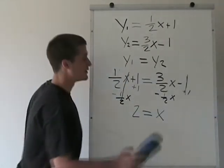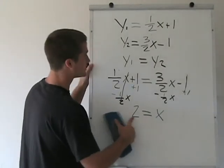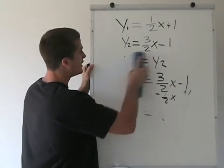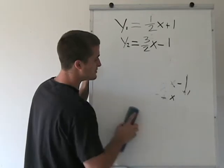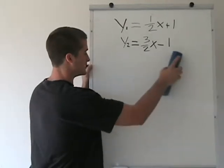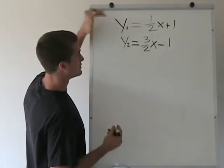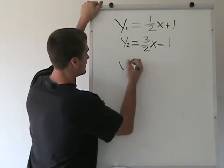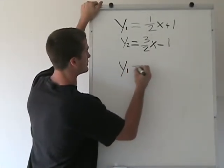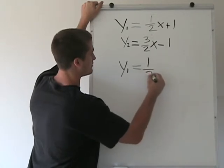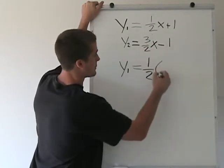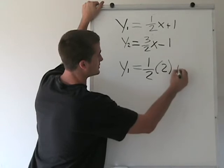But we have to know the y value now. So remember that x is equal to 2. And what we can do is we can plug that 2 back into either one of these equations and get what y is equal to. So let's just pick this first one here. We have y1 equals 1 half. Plug the 2 in for x plus 1.